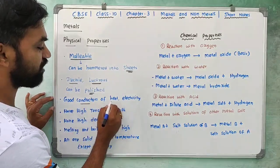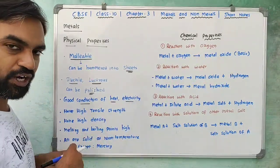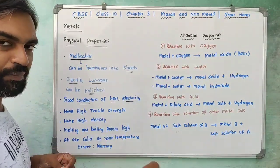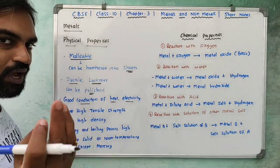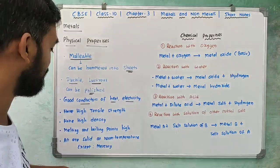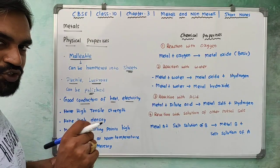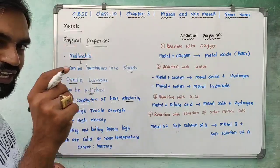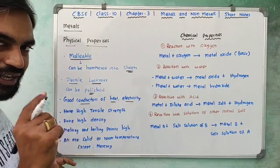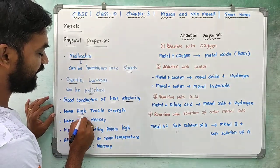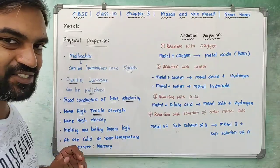Metals are good conductors of heat and electricity. For example, copper is used in electrical wiring because it conducts electricity well. Metals also have high tensile strength.